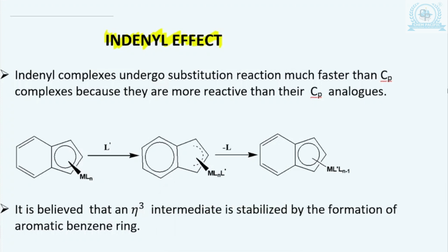This is a very requested video. Students have a lot of doubt about this topic, so I would like to explain it in detail. What are Indenyl complexes? Indenyl complexes are basically complexes where a CP ring has a benzene ring associated with it, and that results in the formation of Indenyl complexes. So in the case of the CP ring you have only the CP ring, but whenever a benzene ring is associated with it, it is termed an Indenyl complex.